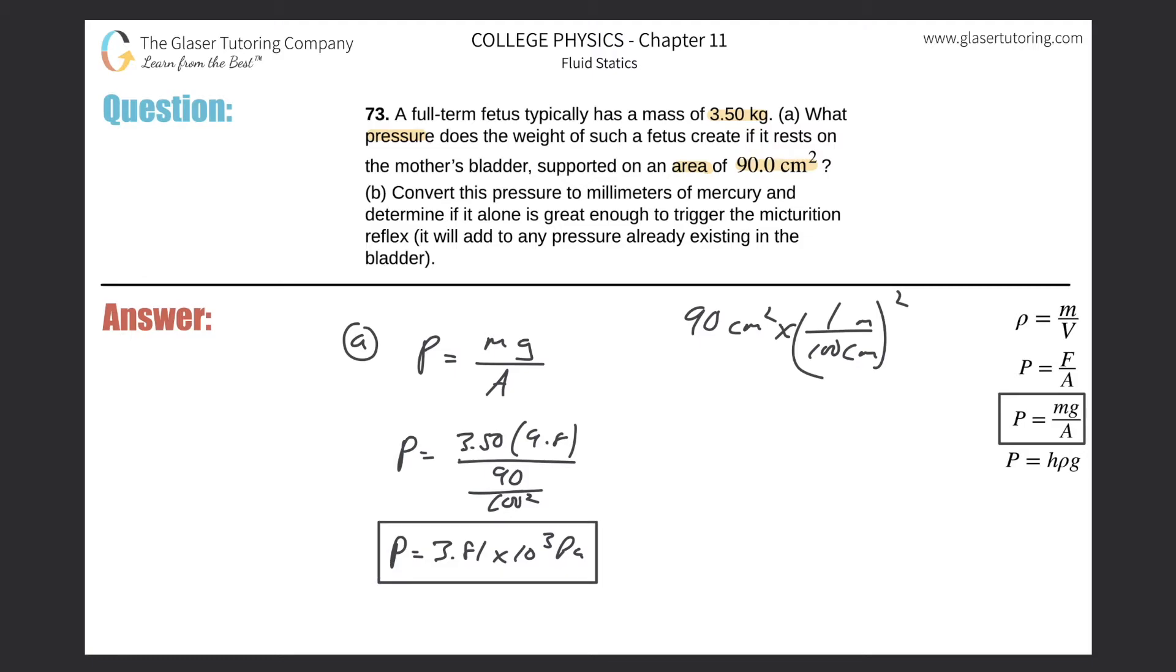For part B, convert this pressure to millimeters of mercury and determine if it alone is great enough to trigger the micturition reflex.